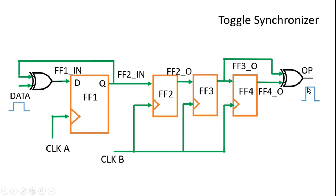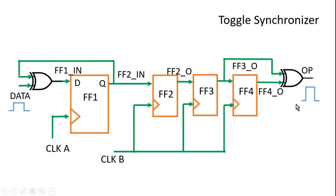Until the next pulse comes on the data signal, all flip-flops carry logic 1 and the XOR gate in clock domain B has both inputs high, so its output remains 0. When the next pulse comes, the output of flip-flop 1 goes to logic 0, which propagates through the clock domain B flip-flop chain. When flip-flop 3 goes low while flip-flop 4 is still 1, the XOR gate output goes high. In the next clock cycle flip-flop 4 also goes low, both inputs are 0, and the XOR gate output returns to 0 — again producing a pulse for one clock B cycle.